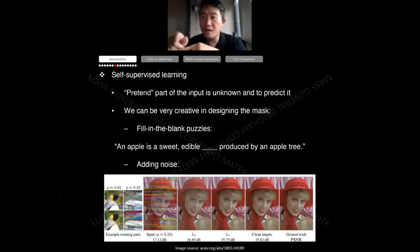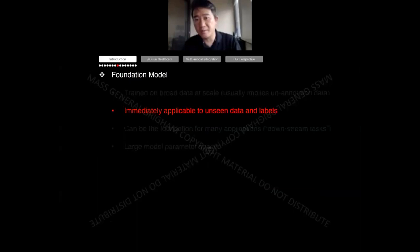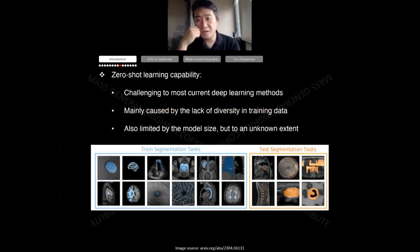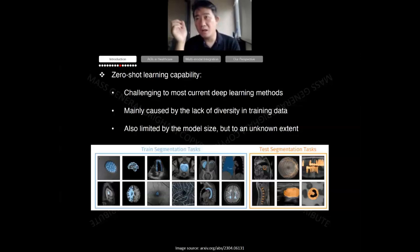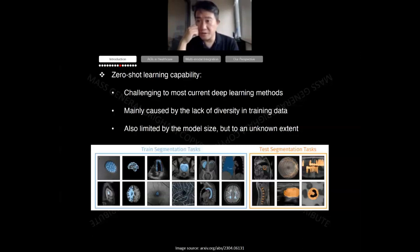This mask-based organization of the training procedure is the key for foundational models. The second key characteristic is zero-shot or few-shot learning capability. Domain adaptation is the most challenging part for most algorithms, including image segmentation and even image reconstruction, mainly caused by lack of diversity in training data. That's why in previous work we developed many federated learning-based methods to train models across a whole spectrum of institutions, but it is still not sufficient.